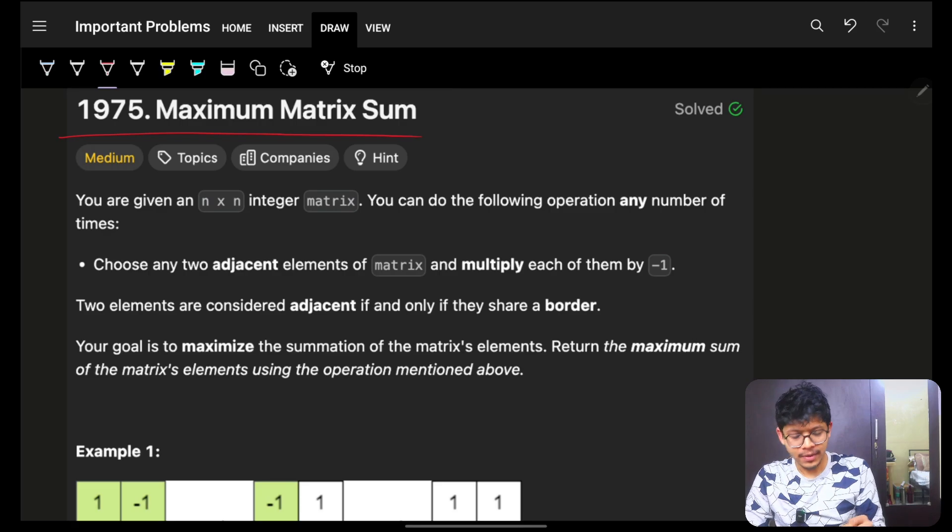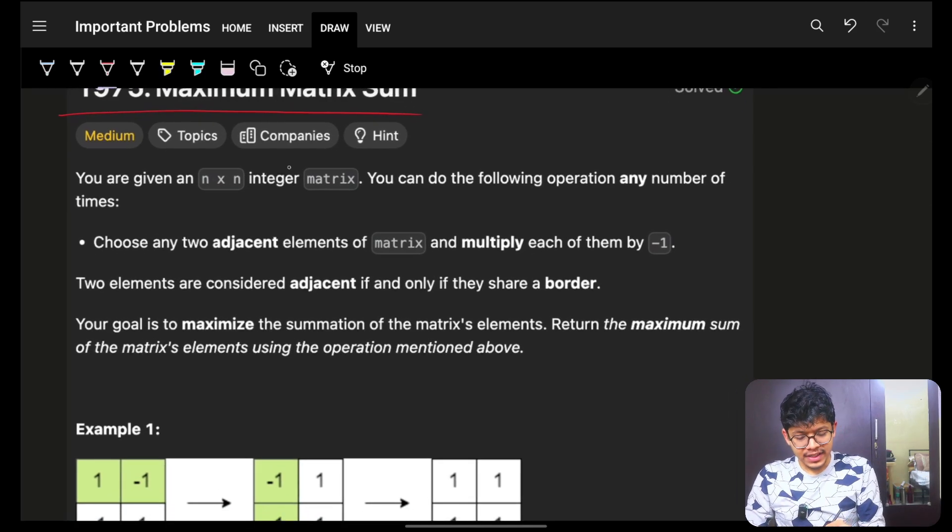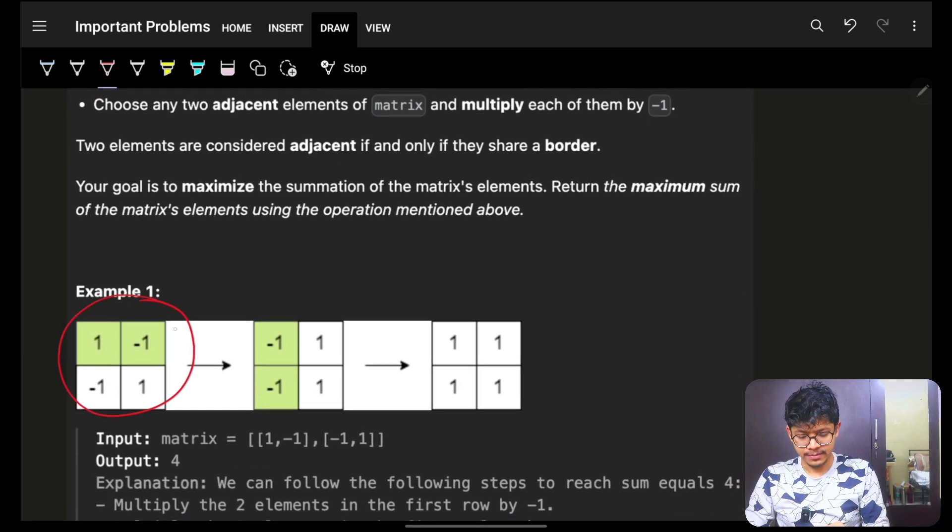In this, we're going to see problem maximum matrix sum. It's actually an easy medium problem. It simply says that you have to give an n cross n integer matrix. As you can see, n cross n integer matrix.